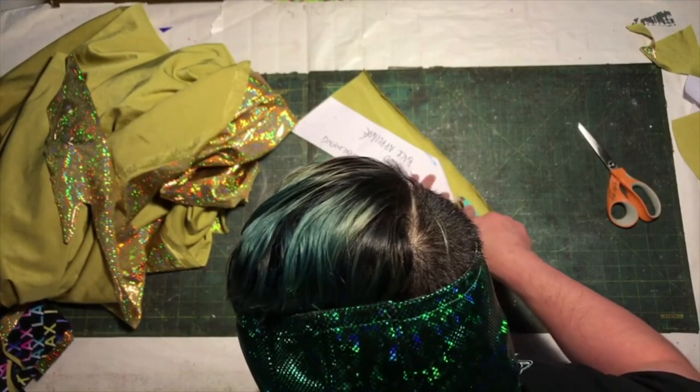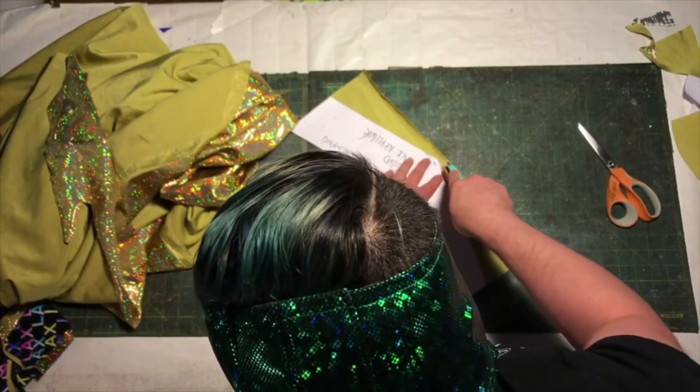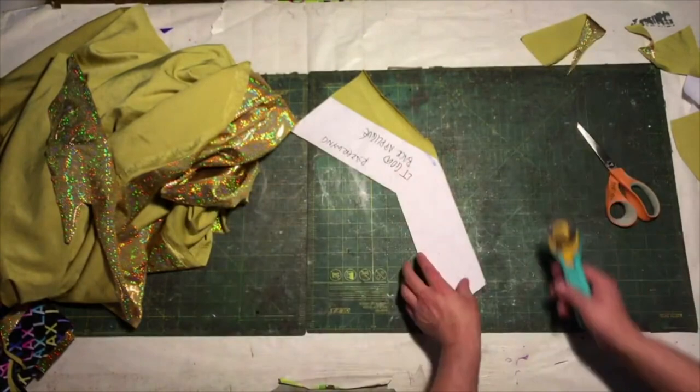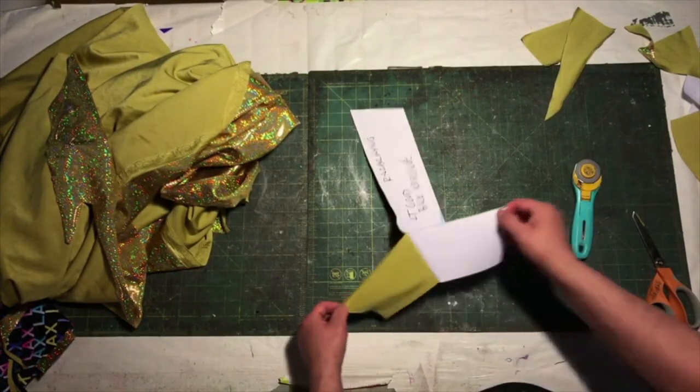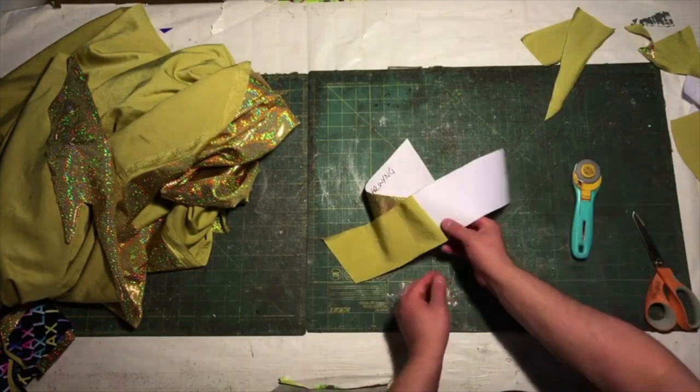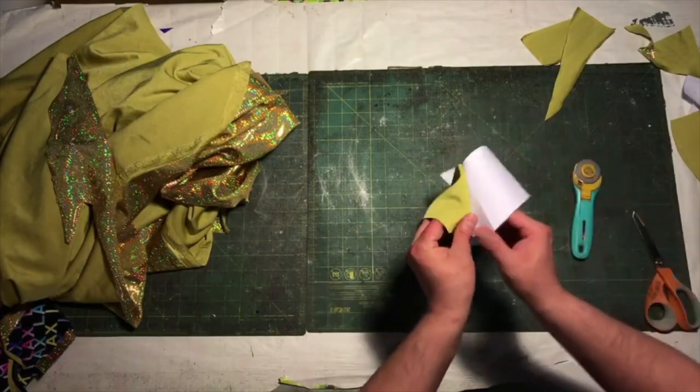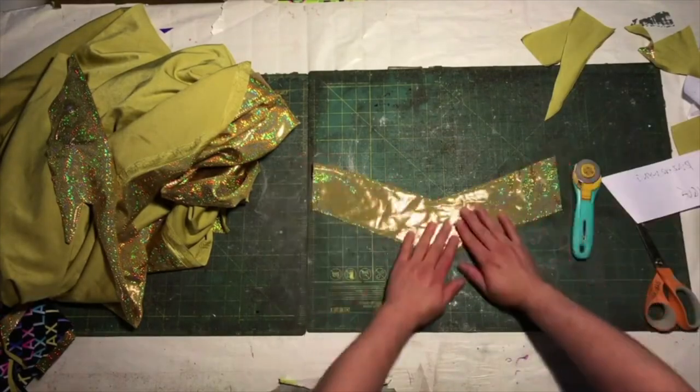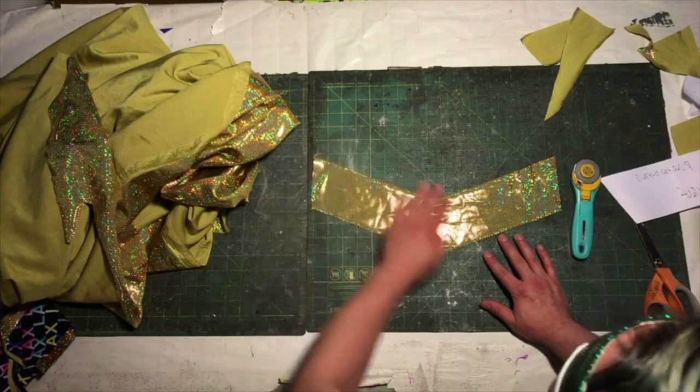We like to use this type of spandex because the large size of the dots means a larger surface area for the foil to stick to. This increases the longevity of the shine over time. Eventually, every piece of gear is going to lose its luster. So, we try to use materials that last as long as possible.